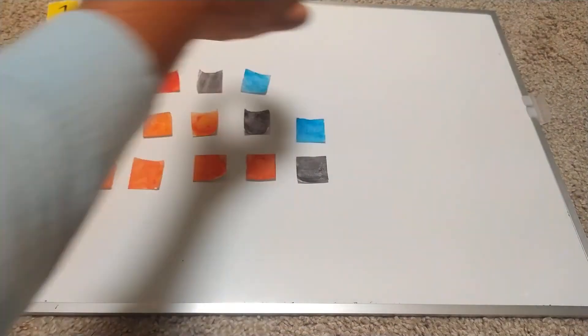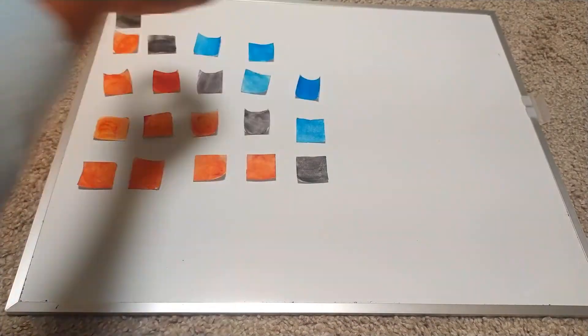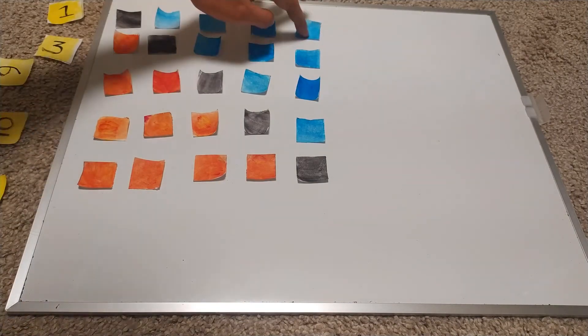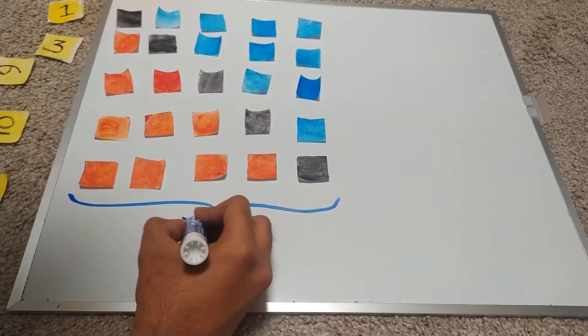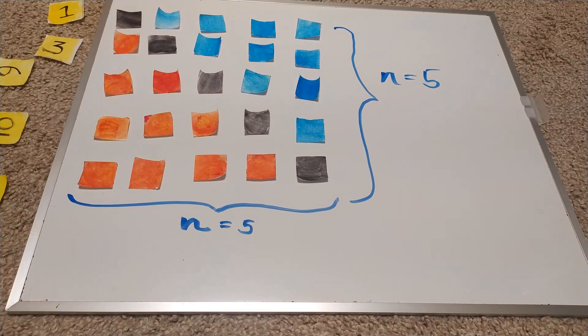We now complete the square by adding the remaining bits of paper on the other side. The total number of bits of paper are n squared as the side length of the square is n.